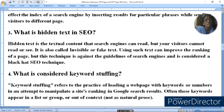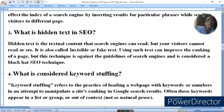What is hidden text in SEO? Hidden text is textual content that a search engine can read but your visitor cannot read or see. It is also called invisible or fake text. Using such text can improve the ranking of a page, but this technique is against search engine guidelines and is considered a Black Hat technique.